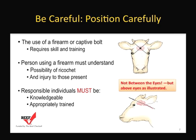Responsible individuals must be knowledgeable and appropriately trained before proceeding. The correct location for using a captive bolt or a firearm shot is at the intersection of a square between the horns and the eyes in a cross fashion. The reason for this cross between the horn and the eye on the opposite side is that you are trying to hit the brain, and the brain is located in the center of the forehead and not between the eyes.